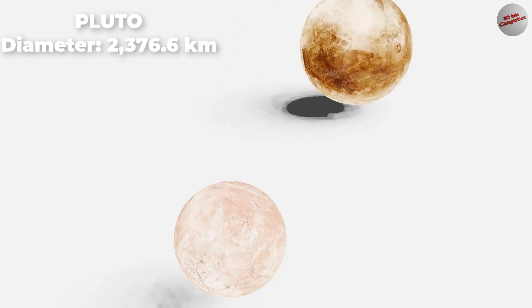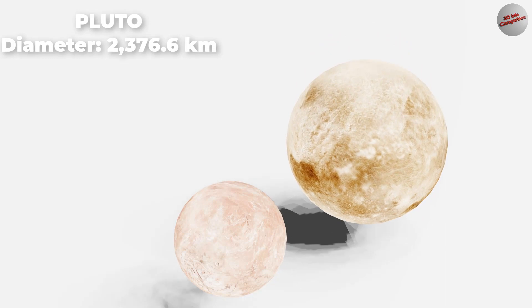Makemake is a dwarf planet and the second largest of what are known as the classical population of Kuiper belt objects. Pluto is a dwarf planet that lies in the Kuiper belt, an area full of icy bodies and other dwarf planets out past Neptune.